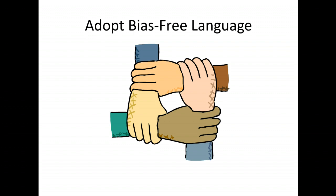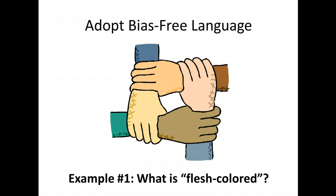What's biased language? Well, what if we use a term such as 'flesh-colored'? What is flesh-colored? For many years it meant a particular flesh of a lighter-skinned person. But that's very culturally specific — that's a biased term. So using that as an adjective, like 'a flesh-colored dress' or 'a flesh-colored pair of pants,' that's a very biased way of speaking.